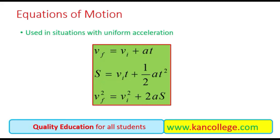There are three basic equations of motion which are commonly used in situations when a body is moving with uniform acceleration. These are commonly called the equations of motion. The first equation represents the relationship of final velocity with initial velocity, acceleration, and time: Vf = Vi + At. The second equation represents the relationship between displacement and initial velocity, time, and acceleration. The third equation represents the relationship between final velocity, initial velocity, acceleration, and displacement.